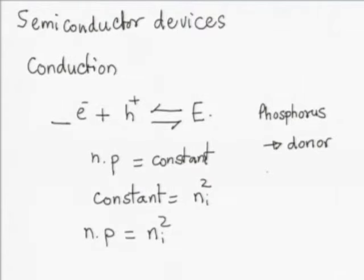Because the donor has lost an electron, it becomes positively charged and contributes a free electron. Notice that now we have a process in which you do not have simultaneous generation of an electron and a hole. When this electron has gone away, it has left an atom where all four bonds are still satisfied — it has no motivation to pull an electron from its neighbor. As a result, we do not have simultaneous generation of a hole. Therefore, in this material there will be many more electrons than holes.